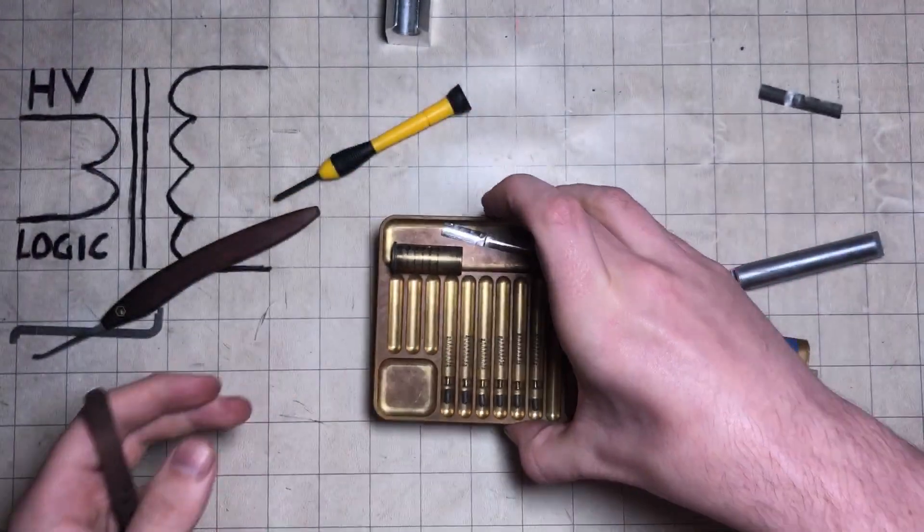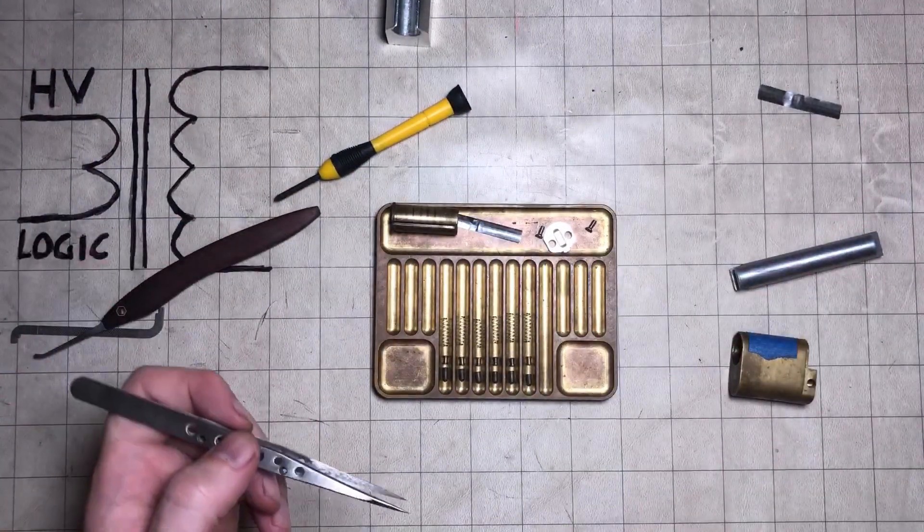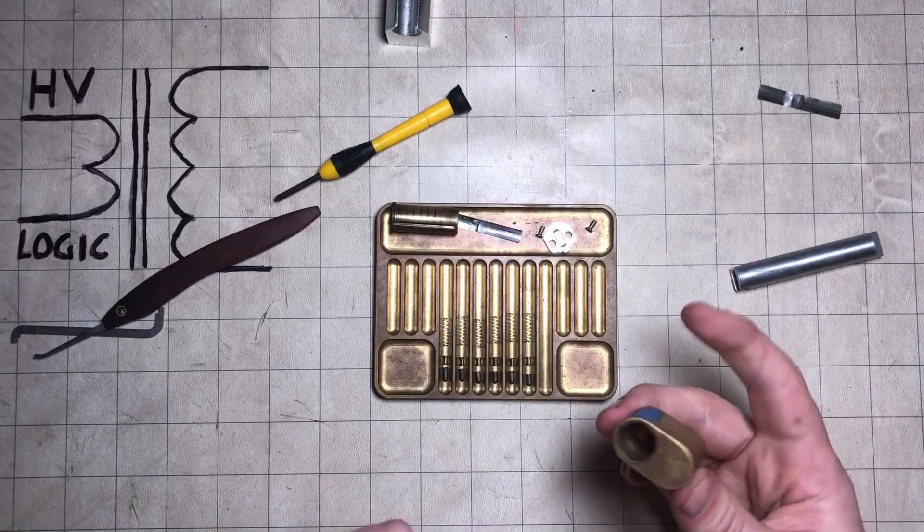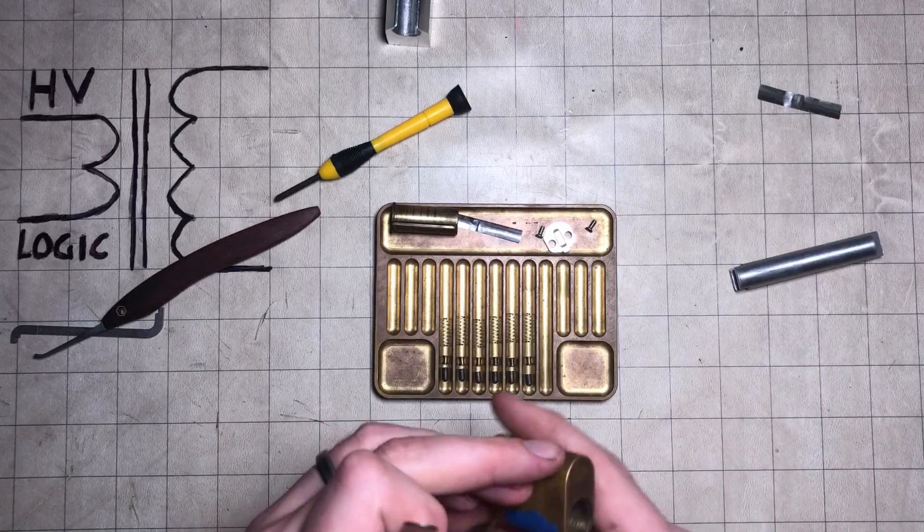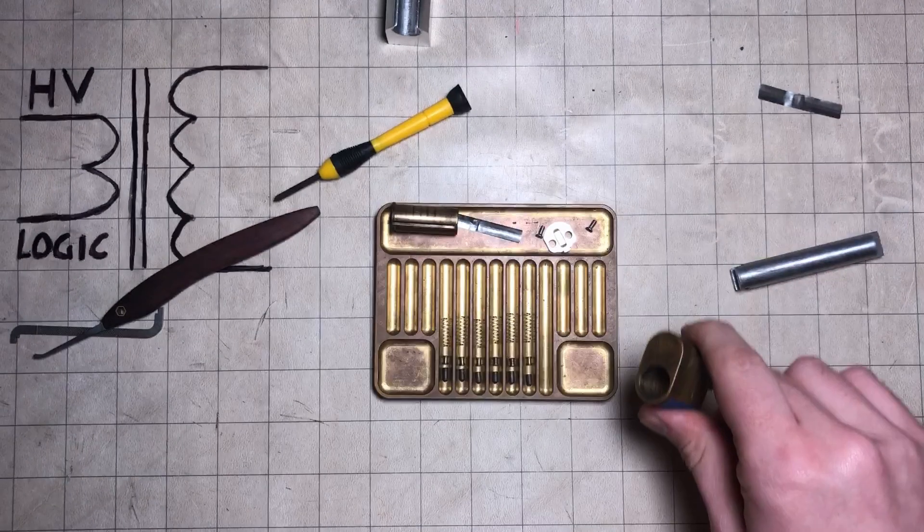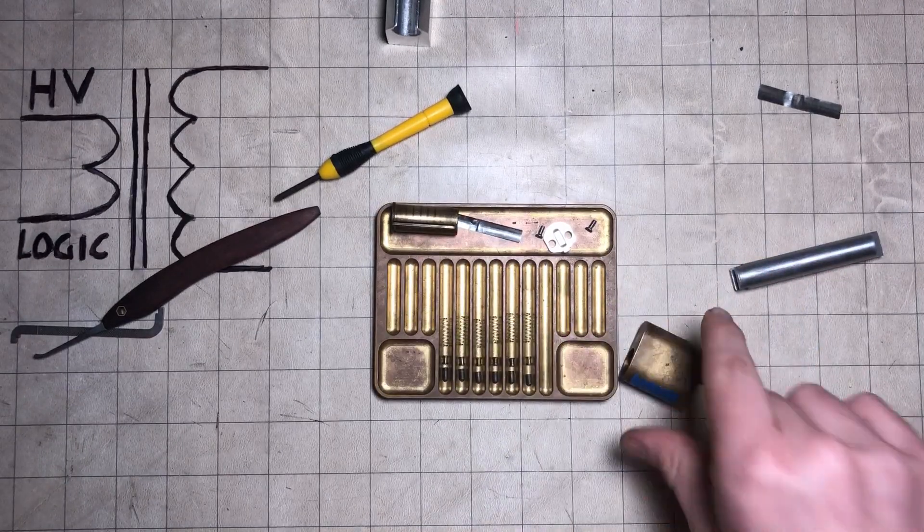But yeah, hopefully at some point I'll turn this thing into a challenge lock, fully pinned with seven, because it'll be nice that way. There we go. That's this old Astrolok I've had sitting on my desk for a bit too long. I'll see you next time.